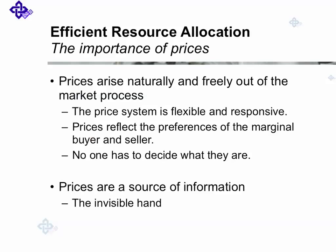You see how important the price mechanism is here. Prices arise naturally and freely out of the market process. The price system is flexible and responsive. Prices reflect the preferences of the marginal buyer and seller, and no one has to decide what they are. The prices are a source of information — the invisible hand — that led the wheat farmers around the world to grow wheat and reduce supply, for their own gain and not for the gain of the developing world.